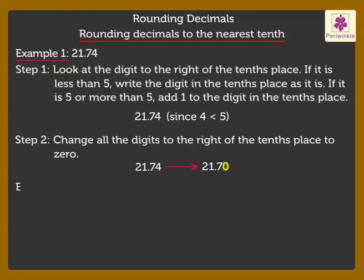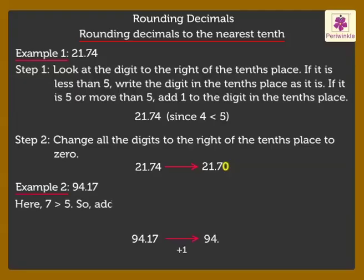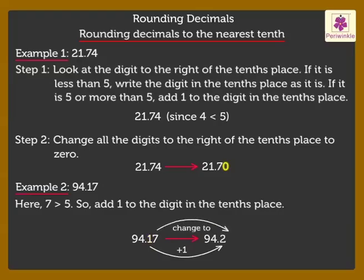Now, let's solve one more example. Round 94.17 to the nearest tenth. Here, we have 7 to the right of the tenths place. As 7 is greater than 5, we add 1 to the digit 1 in the tenths place and change all the digits to the right of the tenths place to 0. Thus, we get the answer as 94.20.